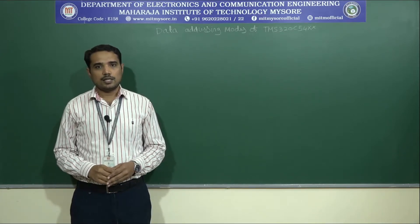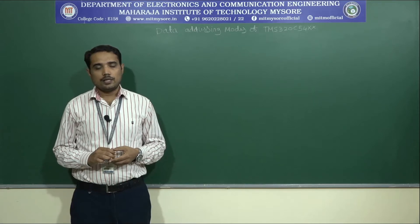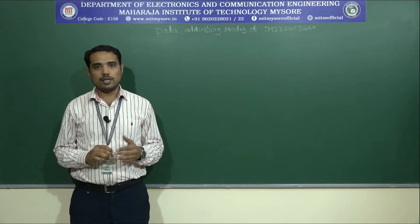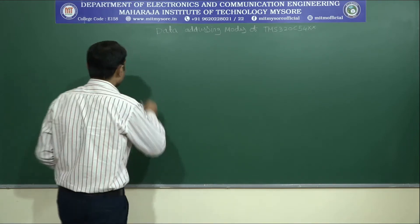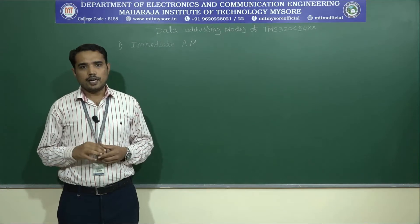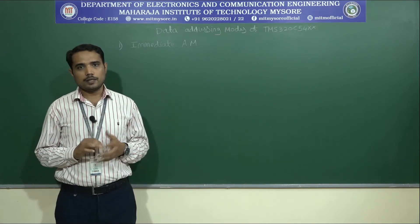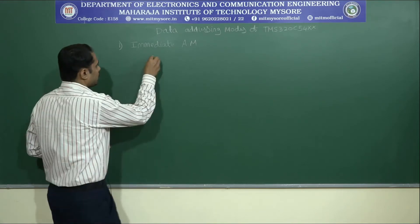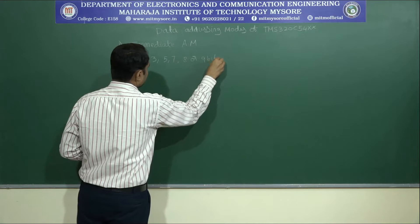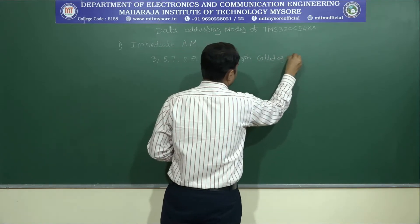Now let us analyze the first type: immediate addressing mode. Let us first recall the definition of the addressing mode — the way in which the operand is specified. In immediate addressing mode, an immediate data will be a part of the instruction. There are two types: the immediate operand may be short in length such as 3, 5, 7, 8, or 9 bits, called short operands.